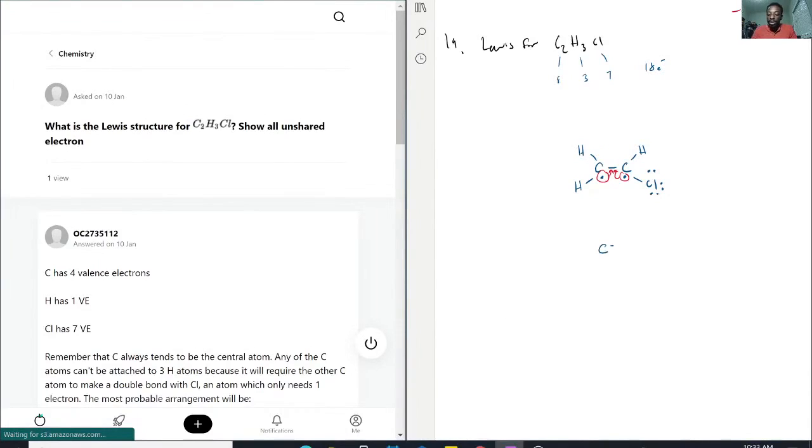So that is why we get now C double bond C, H, Cl, H, H. And now let's verify that we actually do still have 18 electrons. So right now we have 1, 2, 3, 4, 5, 6 bonds. So that's 12 electrons. And then we have 3 lone pairs, so that's 6 more electrons. So that is indeed 18 electrons.